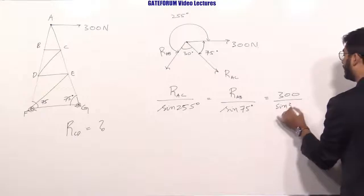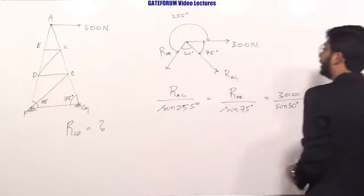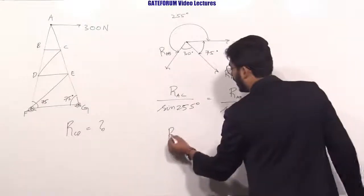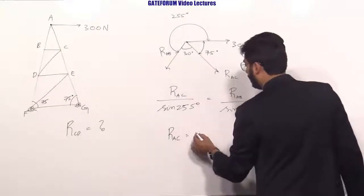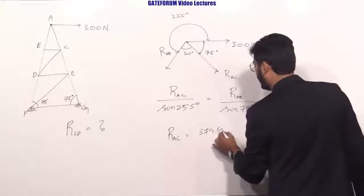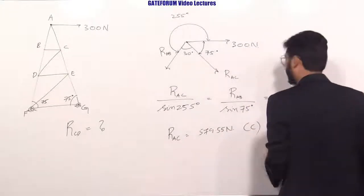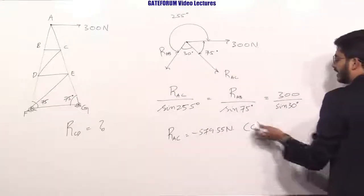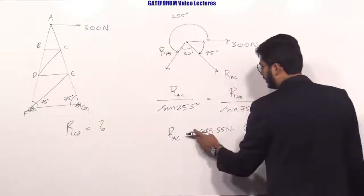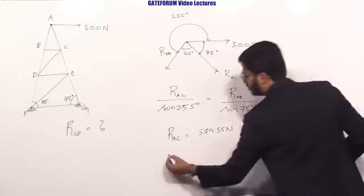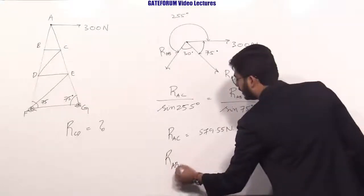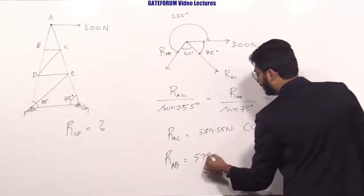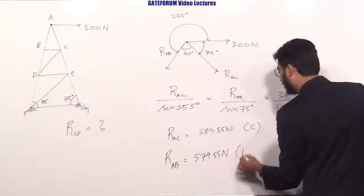We assumed RAC to be in tension, which is not correct — RAC is approximately 579.55 Newtons in compression. The negative sign indicates compression; if we remove it we write it as compression explicitly. RAB is also 579.55 Newtons and will be in tension.